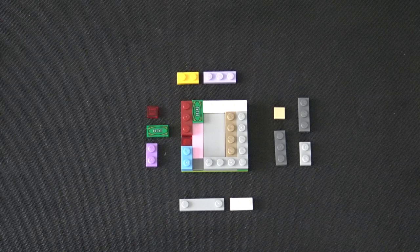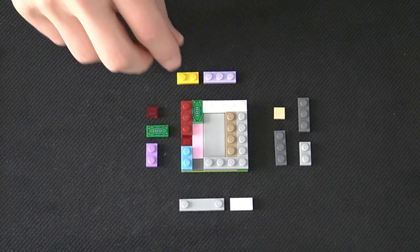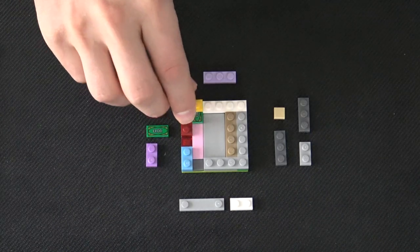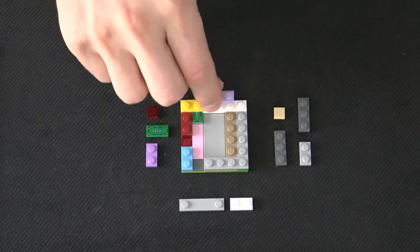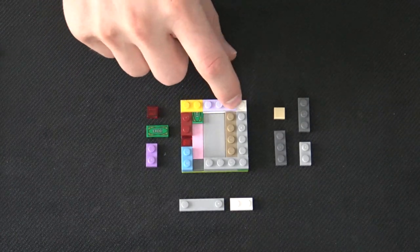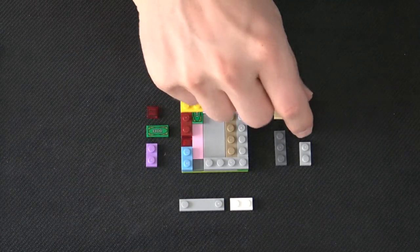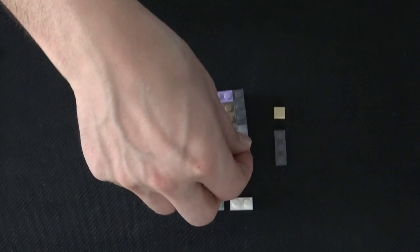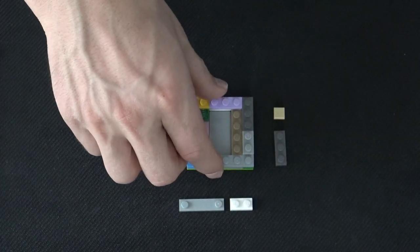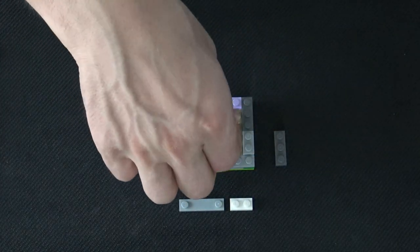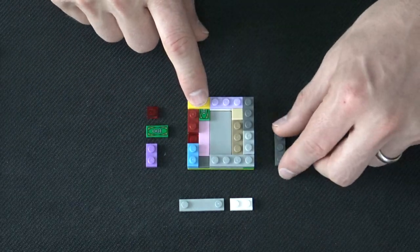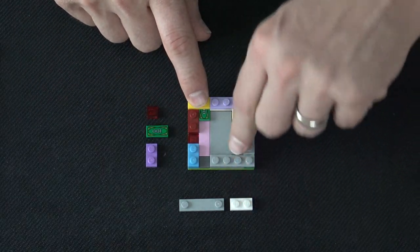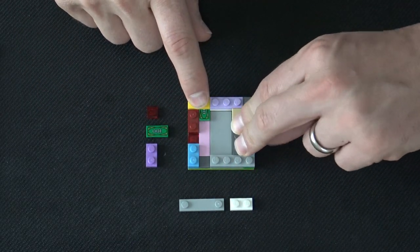You can see these little sort of holes where the one by one tiles are sitting. Okay, let's continue to sort of build out. I'm going to put a one by two plate sort of covering our money piece. Again, you can use one by sixes and one by fours here if you want. That's a fine substitution to make. Here I'm placing a one by one tile.